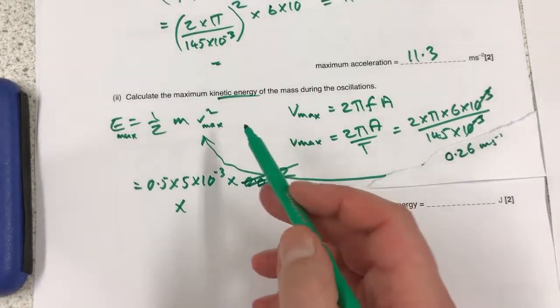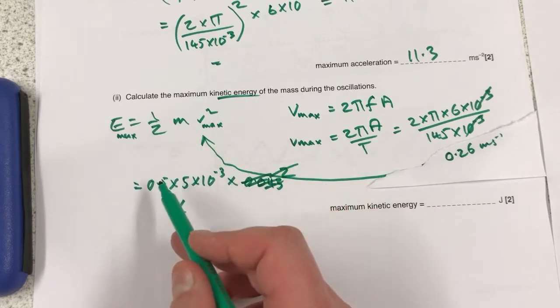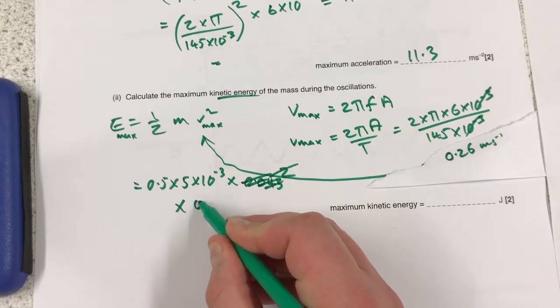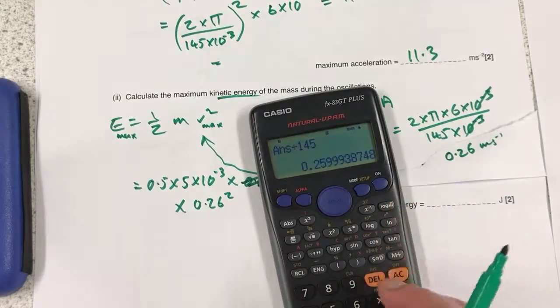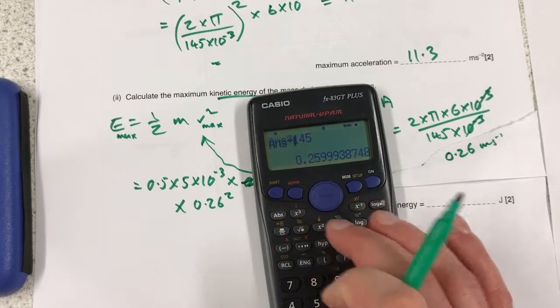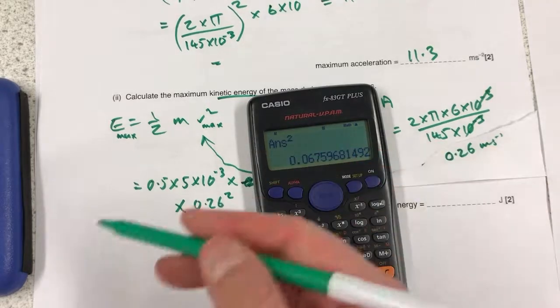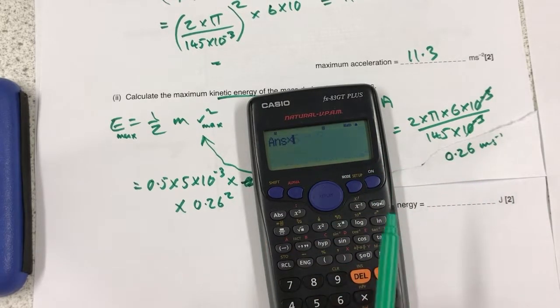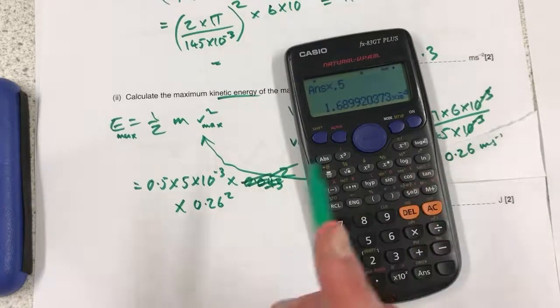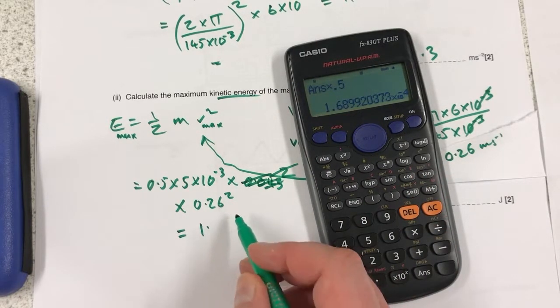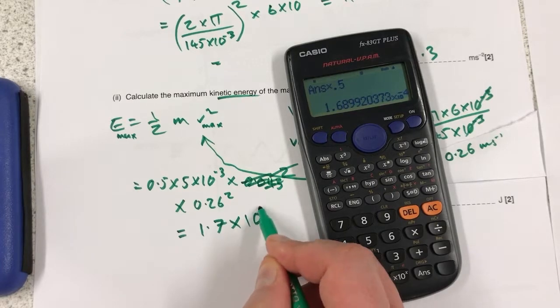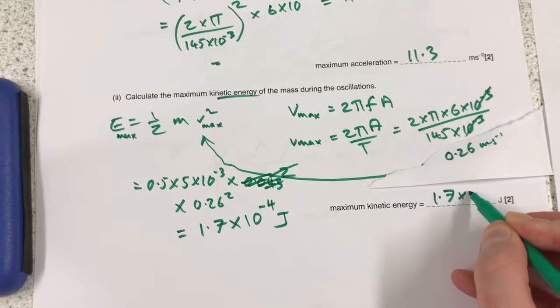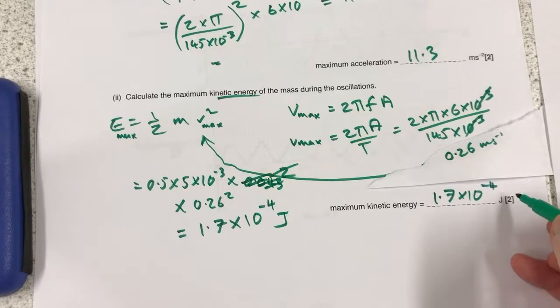That then becomes the velocity max in my kinetic energy equation. So I've got a half times the mass converted into kilograms, times by 0.26 squared. So that on the calculator, I've got 0.26 on the calculator. So if I square that, equals, and then work my way backwards, times by the mass, 5 times 10 to the minus 3, equals times 0.5. And I end up with a kinetic energy maximum of 1.6899, so call it 1.7 times 10 to the minus 4 joules. And that would be my answer here.